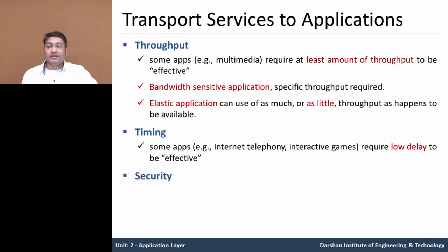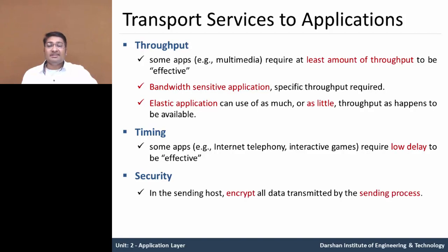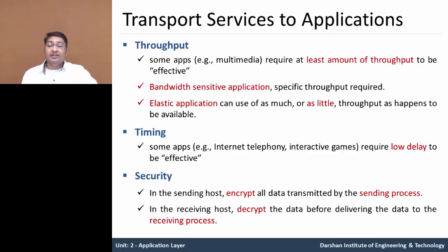The fourth parameter is security. For sending messages to the receiving side, we need to encrypt all data before transmitting. At the receiving side, we need to decrypt the data before delivering it. These are the four service parameters — reliable data transfer, throughput, timing, and security — which help us choose a protocol to develop our internet applications.